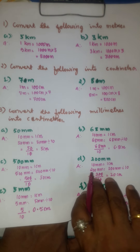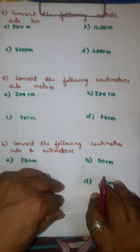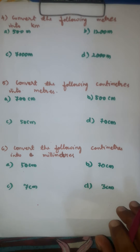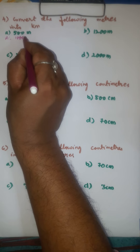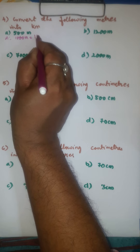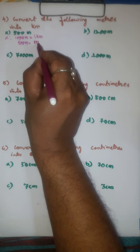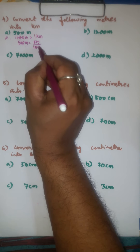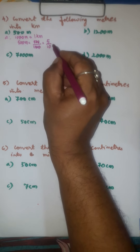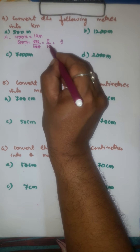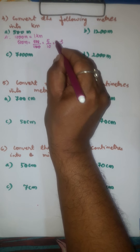Now we will go to the next section. Here you have to convert meters into kilometers. We know that 1000 meters is equal to 1 kilometer. Therefore, 500 meters is equal to 500 divided by 1000. After cancellation we get 5 divided by 10. Write 5 as it is; after 1 there is one 0, so shift 1 place from right to left and put the decimal point. The answer is 0.5 kilometers.